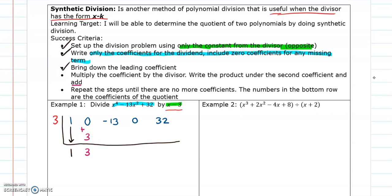So we're going to do 3 times this new 3, and that's going to get me 9. And again, I'm adding. So negative 13 plus 9 gives you that negative 4. Then I do it again. 3 times this negative 4 gives me that negative 12. We're adding, so that's going to give you negative 12. And then last, this 3 times this negative 12, that's negative 36. I add. That gives me a negative 4.